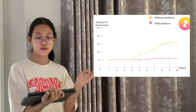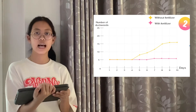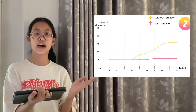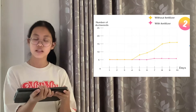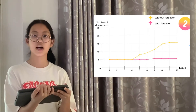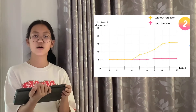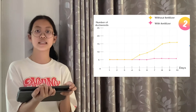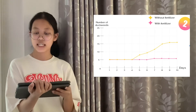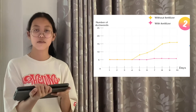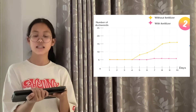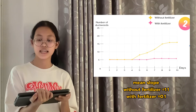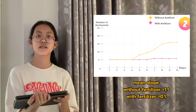This is the graph of trial 2. The yellow line is without fertilizer and the pink line is with fertilizer. The container without fertilizer started with 5 duckweeds on day 1, stayed at 5 from day 1 to day 4, then started to increase from day 5 to day 10, reaching 16 duckweeds by day 10. The container with fertilizer also started with 5 duckweeds, stayed at 5 from day 1 to day 6, then increased from day 7 to day 10, also reaching 16 duckweeds by day 10.